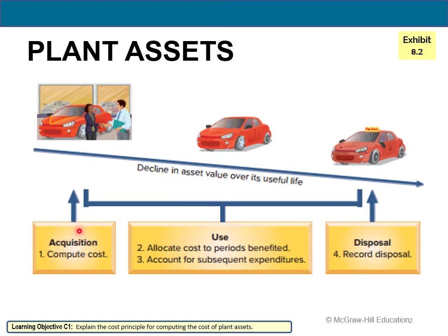Our objective with this chapter is threefold. First, we're going to learn how to journalize and record the acquisition of long-lived assets. Second, the use — which is recording and spreading the acquisition cost over the period in which the asset benefits. So if you have a car estimated to last 10 years, you spread that cost over those 10 years.